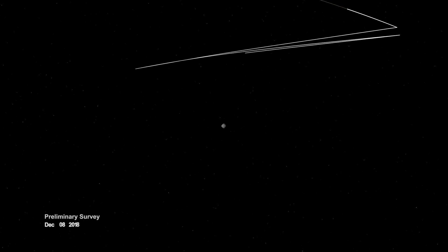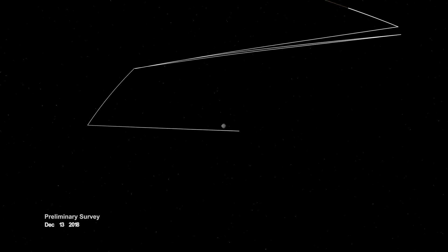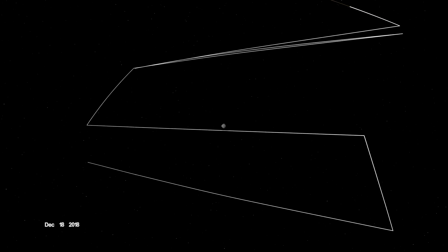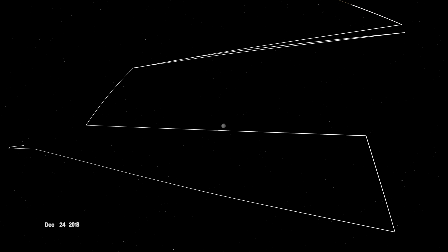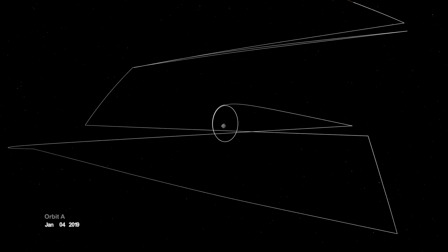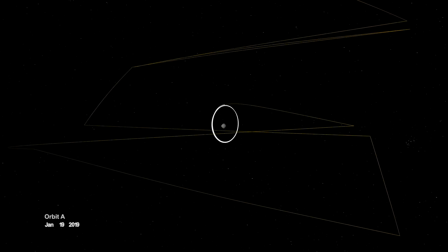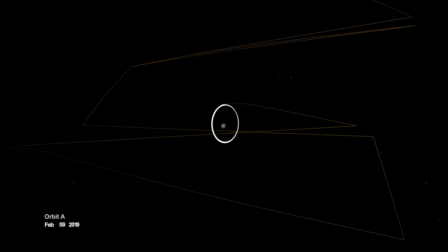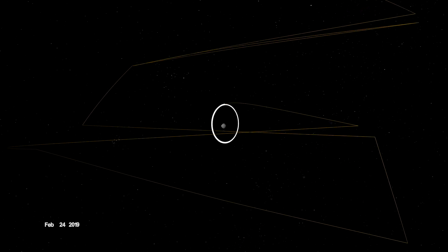When OSIRIS-REx arrived, it began wrapping Bennu in a complex web of observations, starting with a preliminary survey of its size, shape, mass, and spin. On New Year's Eve, OSIRIS-REx was captured into orbit by Bennu's minuscule gravity, making it the smallest world ever to be orbited by a spacecraft.